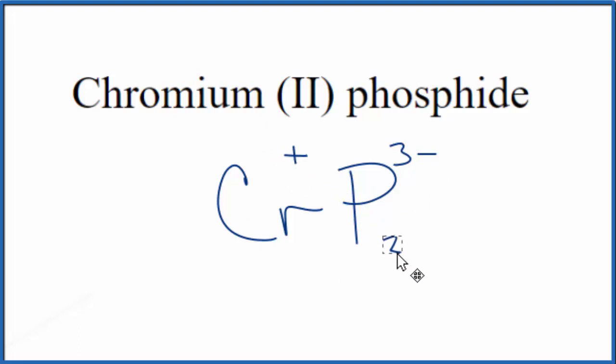We can move the 2 here and then the 3 here. We'll get rid of these symbols here. And this is the formula for chromium(II) phosphide.